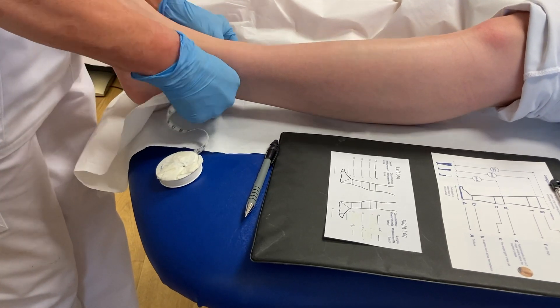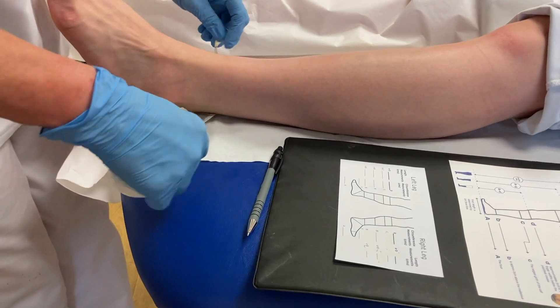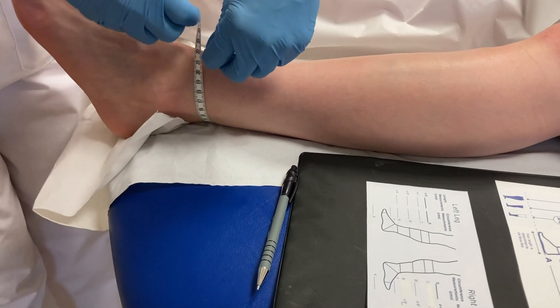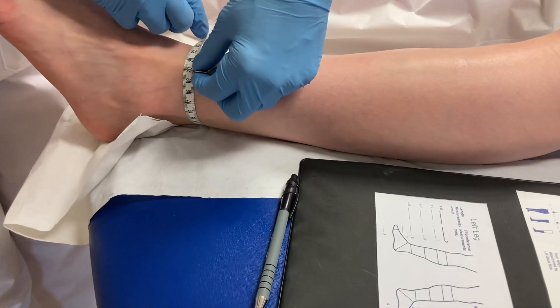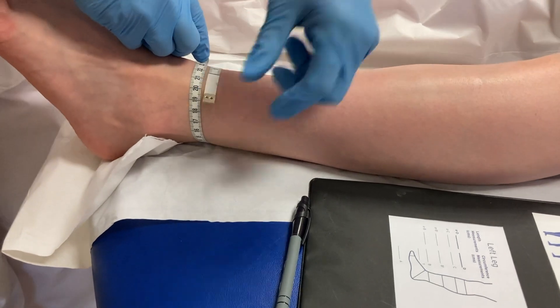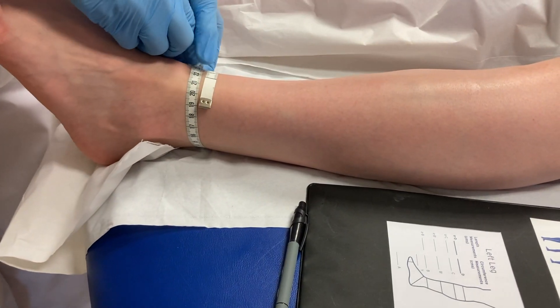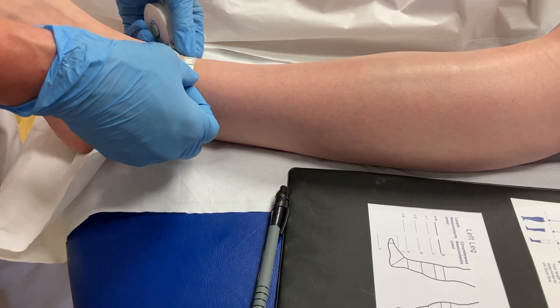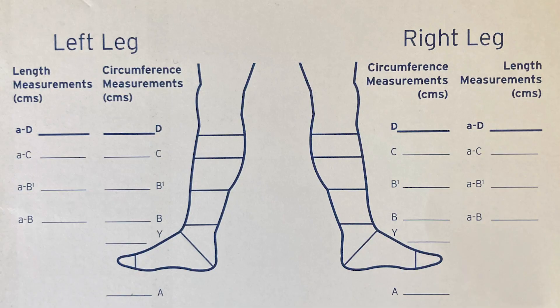Around the ankle, the tape is placed with no pulling — just laying the tape down — and we've got 21.5 cm. That is the B measurement.